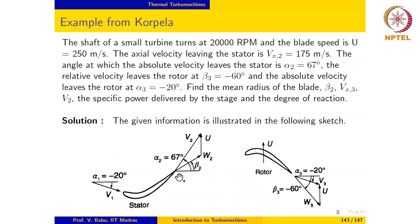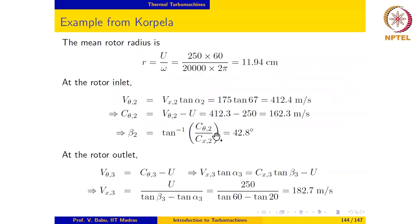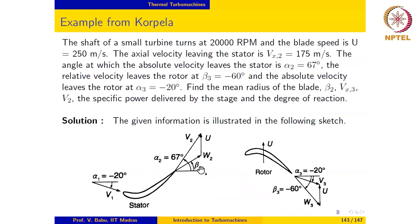The mean rotor radius is nothing but the blade speed divided by the angular speed of the rotor. So that is 250 meters per second divided by 2 pi n over 60, which gives the mean radius to be 11.94 centimeters.